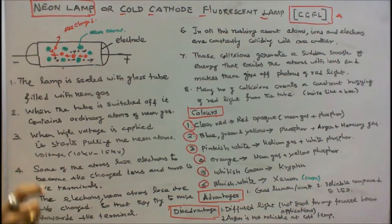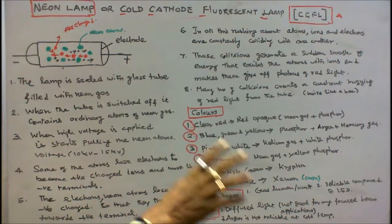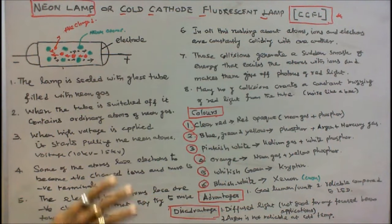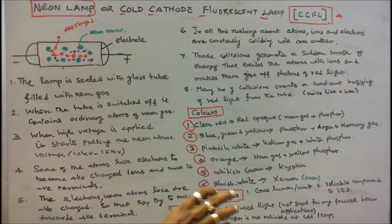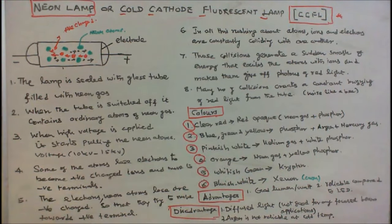The advantages of neon lamps are: number one, good lumen per watt; number two, more reliable compared to light emitting diodes. The disadvantages are: number one, diffused light — it gives only diffused light and is not good for focused beam applications; number two, argon is not reliable at cold temperatures.